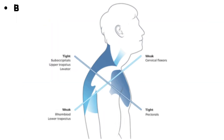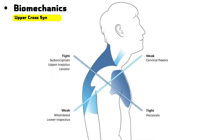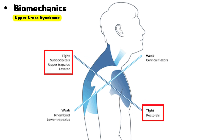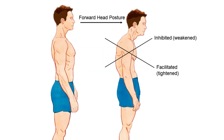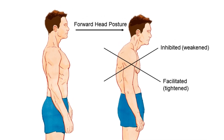Looking at the biomechanics of upper crossed syndrome, the tight and overactive muscles are the upper trapezius, levator scapulae, pectoralis major and minor, while the weaker or inhibited groups are the deep neck flexors, lower trapezius, and serratus anterior. These imbalances create the characteristic forward head posture, rounded shoulders, and excessive upper back curvature seen in upper crossed syndrome.